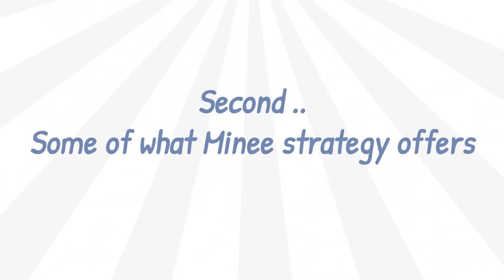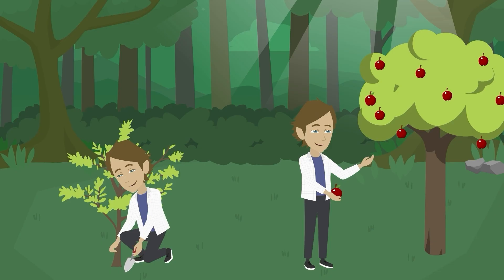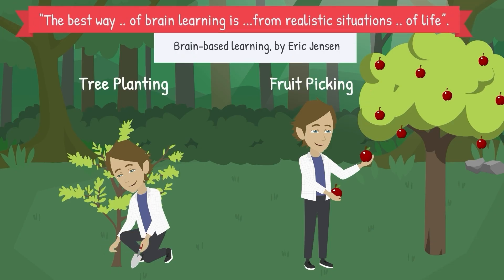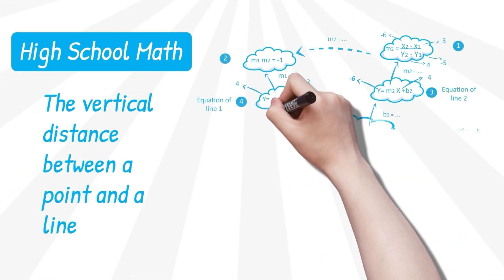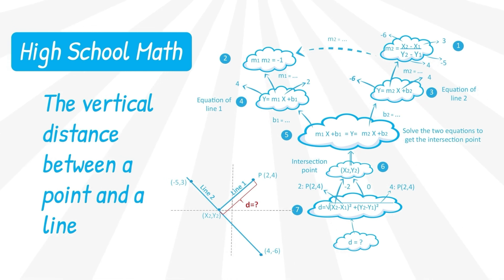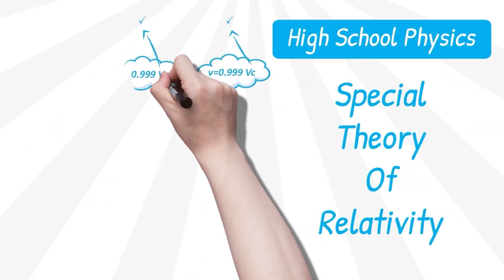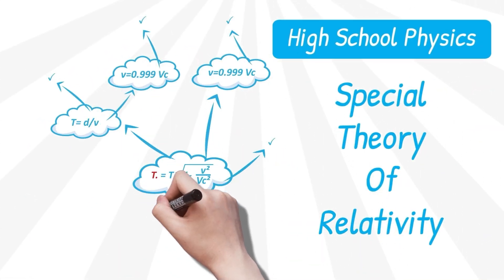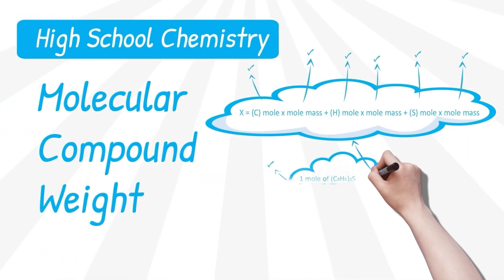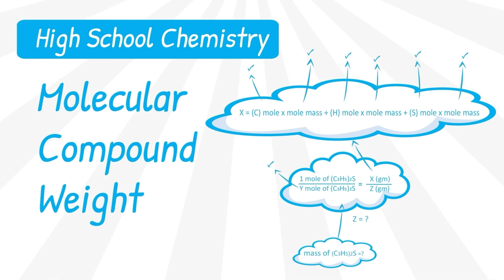Second, some of what Miney Strategy offers: the two magic steps, then some examples — the vertical distance between a point and a line for high school math, the special theory of relativity for high school physics, and molecular compound weight for high school chemistry.